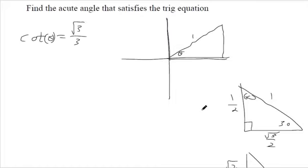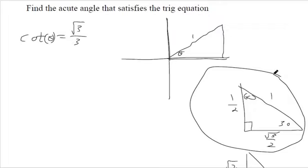So for this one, for cotangent theta to equal square root of 3 over 3, we know it has to be this triangle, because we have to have a square root of 3 involved.